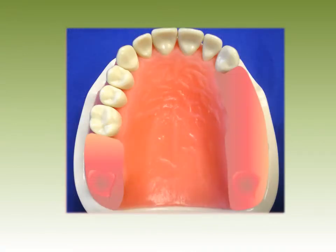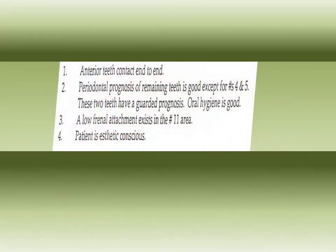Let's describe our clinical findings. In terms of occlusion, the patient is an Angle class 3 with end-to-end occlusion. The periodontal condition is good with the exception of numbers 4 and 5, which have a guarded prognosis. Oral hygiene has improved and periodontal referral has been accomplished. There is a frenal attachment which could interfere with placement of a bar-type clasp on number 11. The patient is aesthetic-conscious but has limited funds.